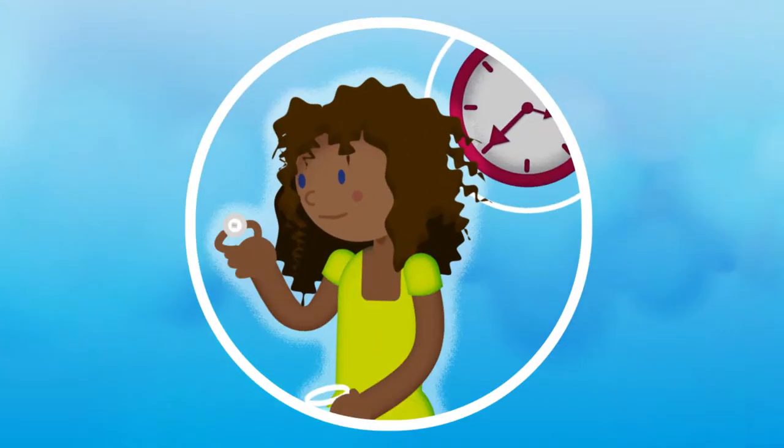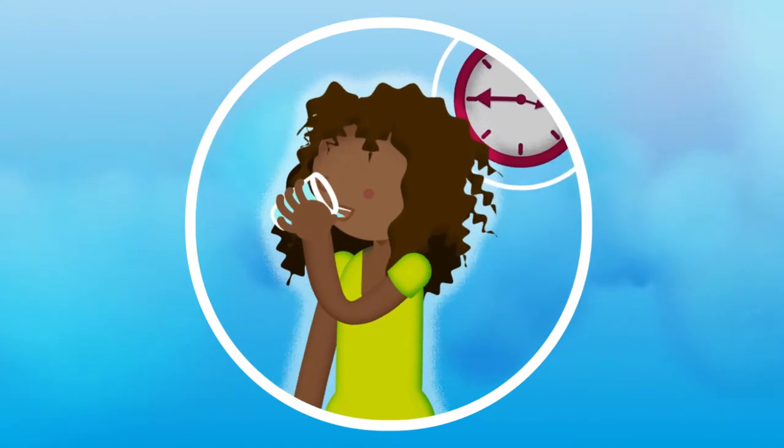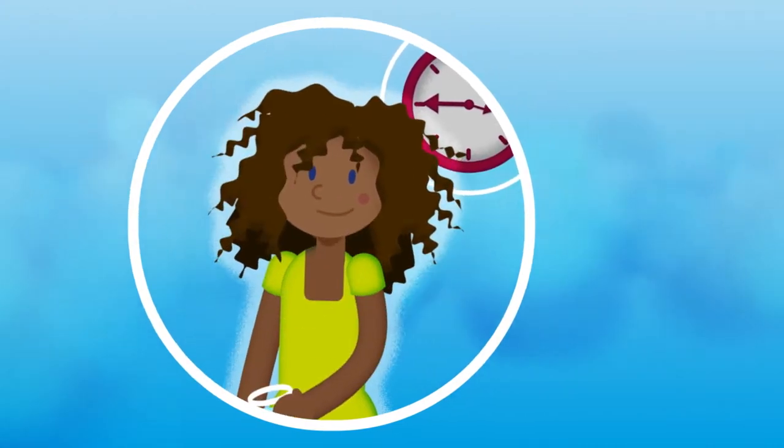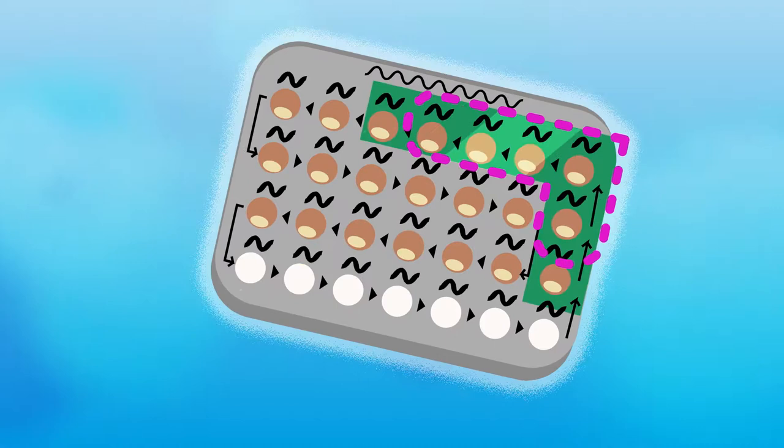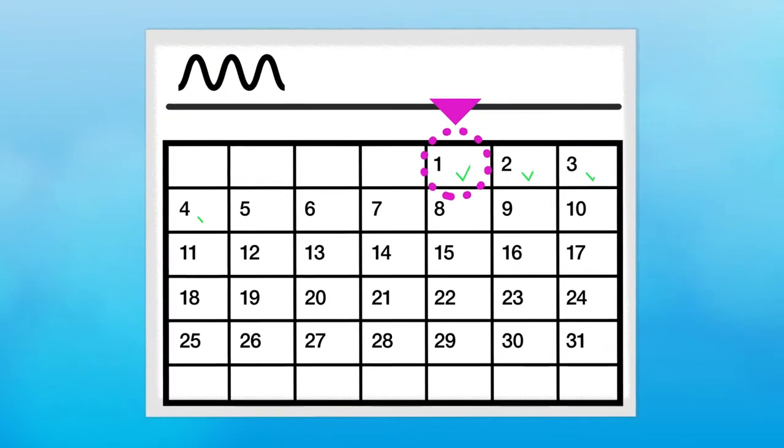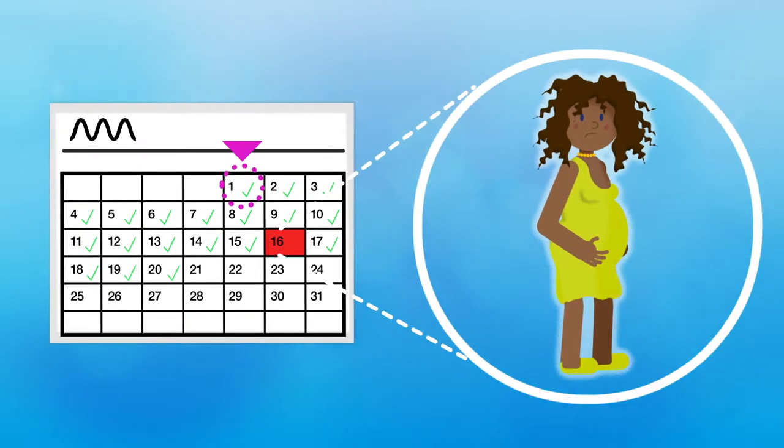Remember though, to stay protected you need to take the pill at the same time every day and start it in the first five days of your monthly cycle. If you forget to take even one pill during the month or start late, you may not be protected.